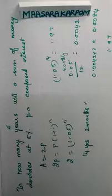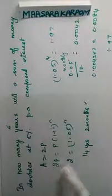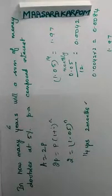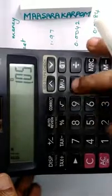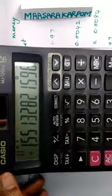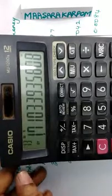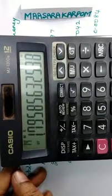Question Number 6: In how many years will a sum of money double at 5% per annum? Since it doubles, amount = 2P. So 2P = P × (1 + i)^n. Substituting i = 5% (0.05), we get 2 = (1.05)^n. Using a calculator to solve, the option is approximately 14 years something.